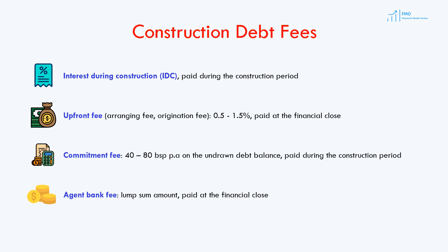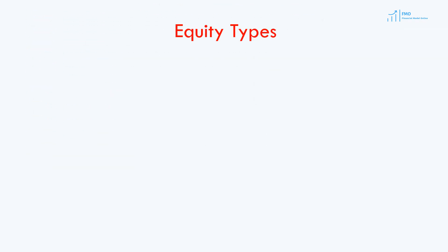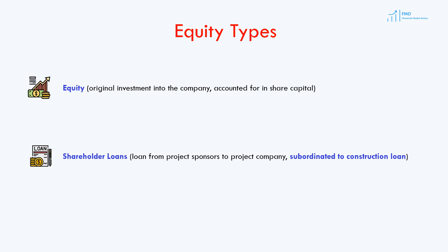Having talked about the construction debt, let's now remind ourselves about equity financing. Equity usually comes in the form of ordinary equity or sometimes preferred equity, and it may also come in the form of a loan from project sponsors to the project company. Shareholder loans are used to reduce the taxes paid, because interest on the shareholder loan is tax-deductible.